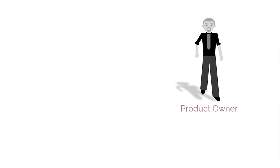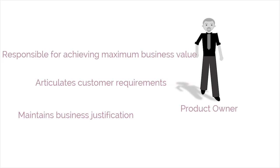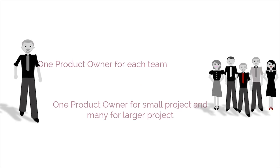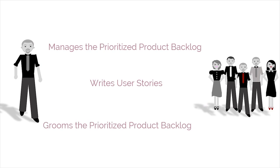Product owner is the first source of input. The product owner is the person responsible for achieving maximum business value for the project. He or she is also responsible for articulating customer requirements and maintaining business justification for the project. The product owner represents the voice of the customer. Each Scrum team will have a designated product owner — a small project may only have one, whereas larger projects may have several. These product owners are responsible for managing their sections of the prioritized product backlog, writing user stories, and grooming the backlog.